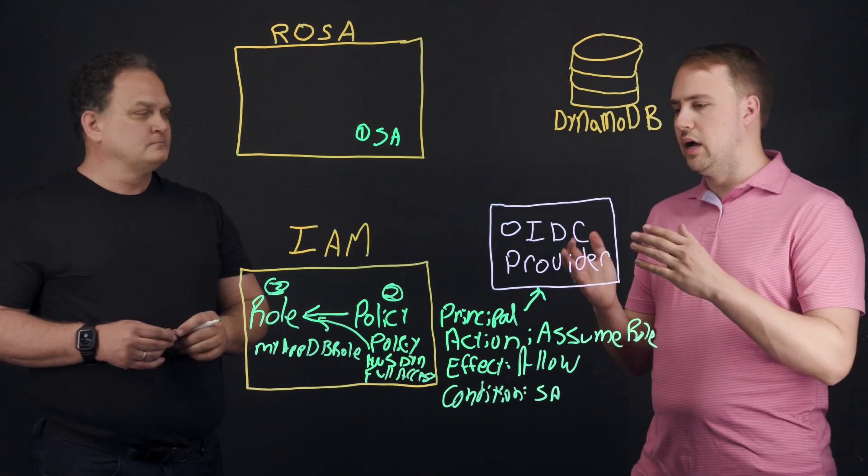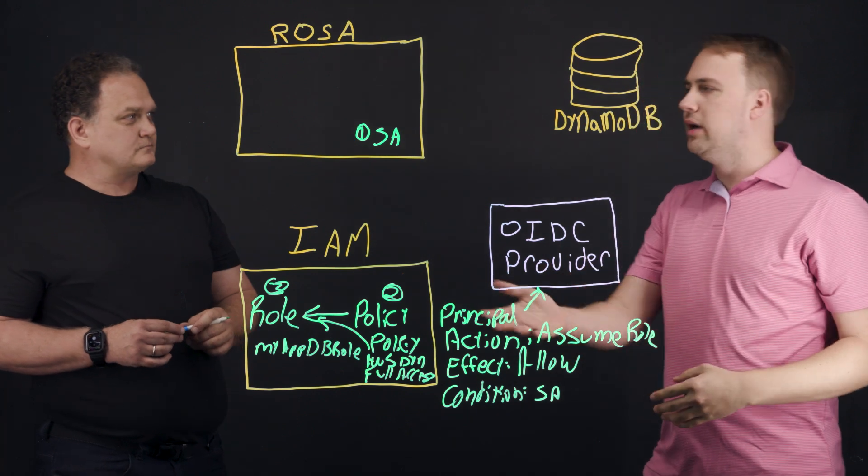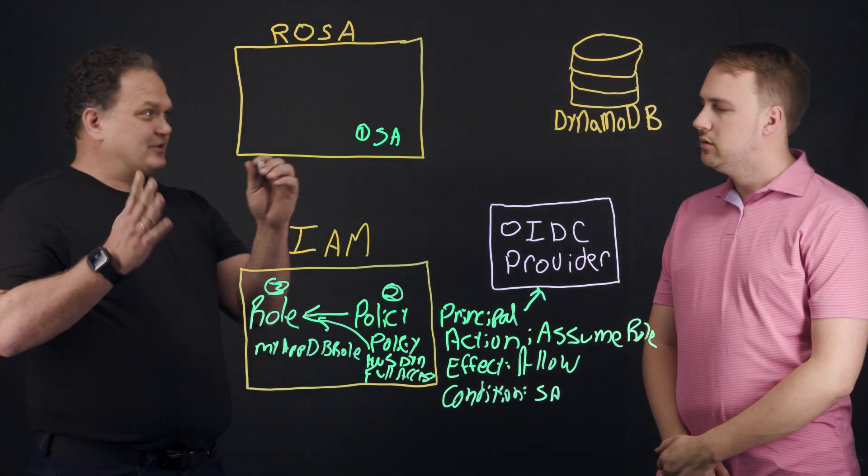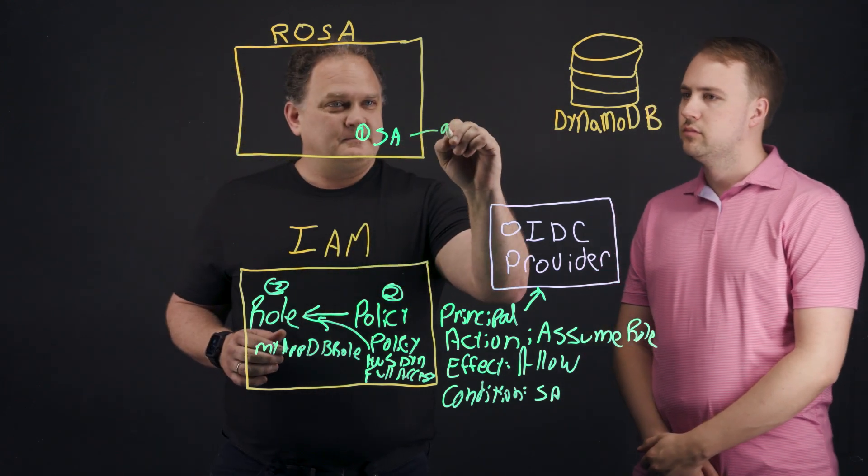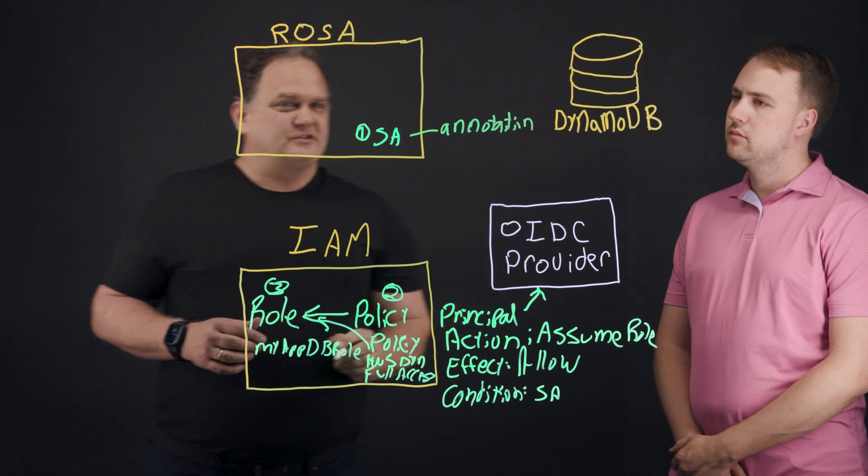Awesome. So I understand this, but I'm confused. How does the service account actually know anything about what's going on at AWS IAM? Great question. So when we create the service account, we create an annotation.